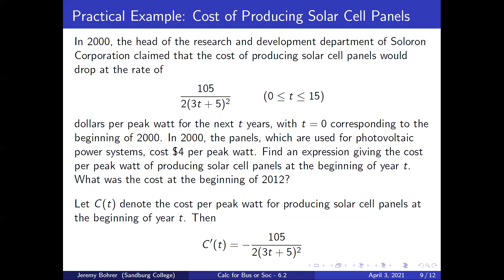Here's a practical example. In 2000, the head of research and development at Solaron Corporation claimed that the cost of producing solar cell panels would drop at the rate of 105 over 2 times 3t plus 5 squared, for zero less than or equal to t less than or equal to 15, dollars per peak watt for the next t years, with t equals zero corresponding to the beginning of 2000. In 2000, the panels, used for photovoltaic power systems, cost $4 per peak watt. Find an expression giving the cost per peak watt at the beginning of year t, and find the cost at the beginning of 2012. Let c of t denote the cost per peak watt. Then c prime of t equals negative 105 over 2 times 3t plus 5 quantity squared.